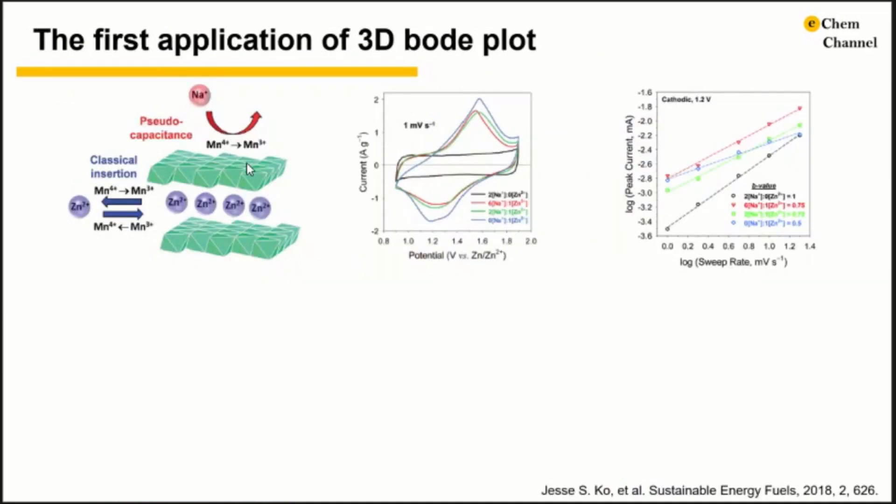Here is an example where 3D Bode plots are first employed. On the magnesium oxide electrodes, the intercalation of zinc ion is diffusion controlled and the sodium storage is pseudocapacitive. Jisco et al. studied the charge storage mechanism with mixed zinc and sodium ion based electrolyte. Based on the CV, it is very clear that the sodium intercalation is capacitive. All other electrolytes with zinc ions all show similar battery-like features.